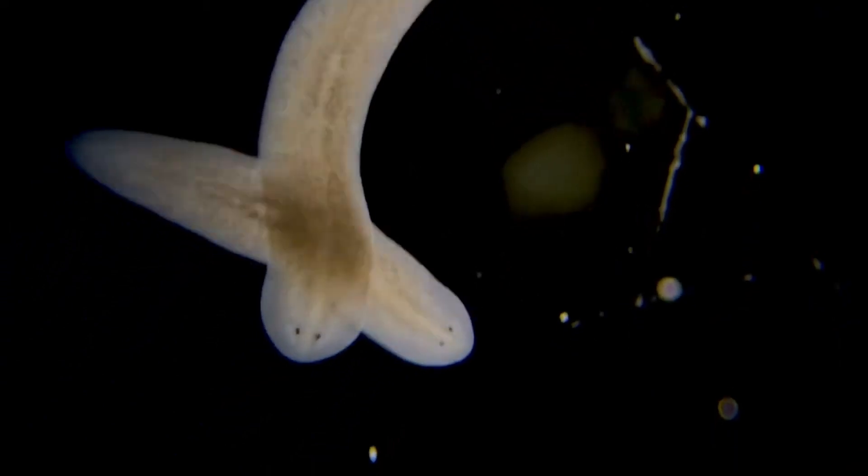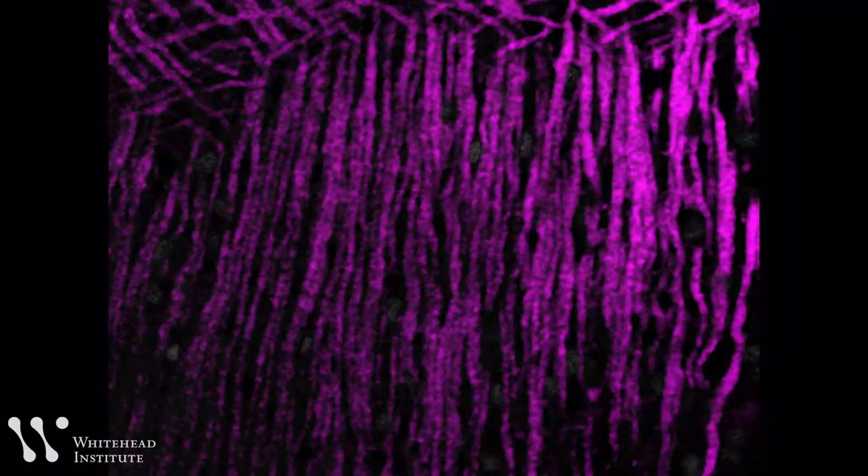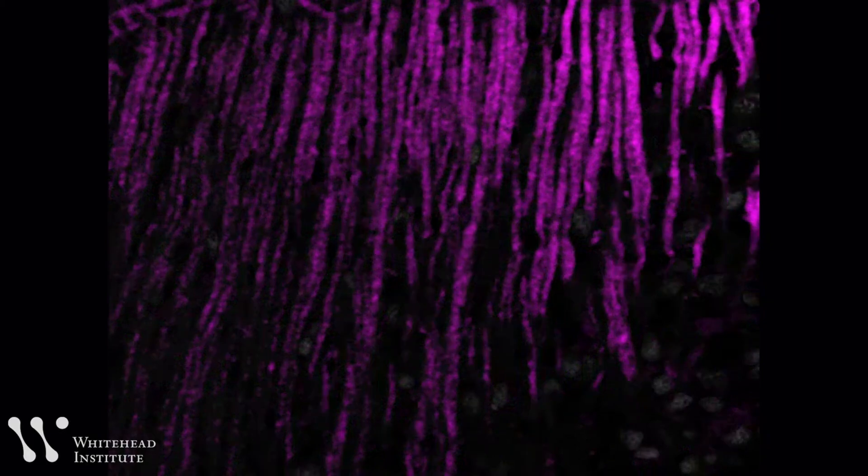Planarians are pretty simple animals, but they do have brains that control things like sensory reception. It's hard to know what memories a planarian has, of course.